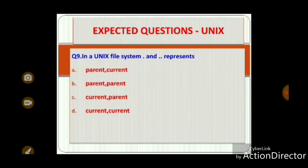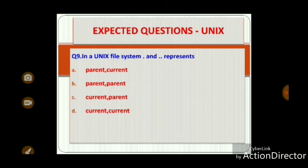Question 9: In a Unix file system, dot (.) and double dot (..) represent — Option A: parent, current. Option B: parent, parent. Option C: current, parent. Option D: current, current. The correct answer is Option C — current directory and parent directory.